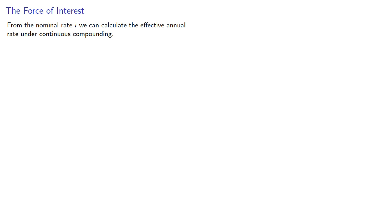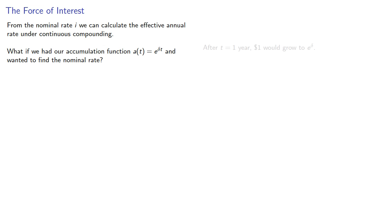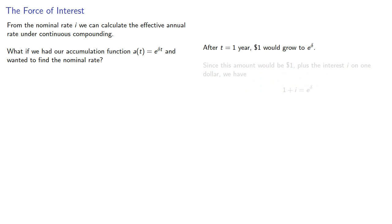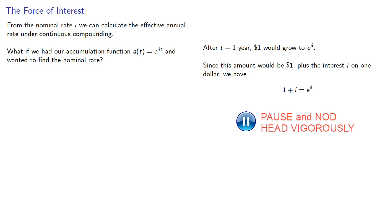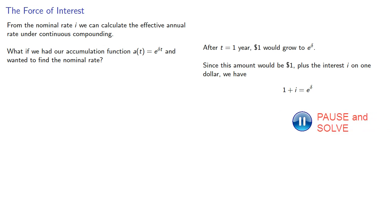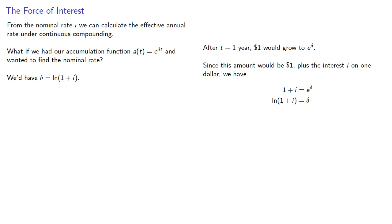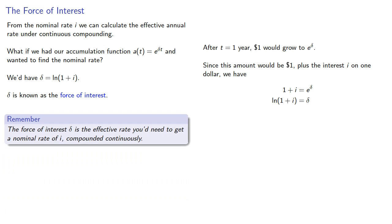From the nominal rate i, we can calculate the effective annual interest rate under continuous compounding. What if we had our accumulation function a(t) equal to e to something and wanted to find the nominal rate? We note that after one year, one dollar would grow to e to the power delta. Since this amount will be one dollar plus the interest i on one dollar, we can solve for delta, giving us delta equal to log of one plus i. This value delta is known as the force of interest — the effective rate you'd need to get a nominal rate of i compounded continuously.